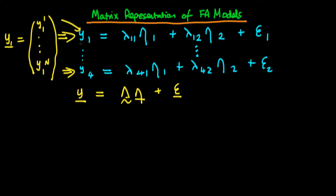The way in which we can do that, as a start, is we could just add an index i to each of our variables. So we have Y_i1 equal to lambda_11 times eta_i1 plus lambda_12 times eta_i2 plus epsilon_i1, where i takes on the values 1, 2, all the way through to n. We can do that for each equation in our system — so Y_i4 equals lambda_41 times eta_i1 plus lambda_42 times eta_i2 plus epsilon_i2.